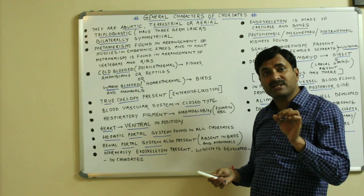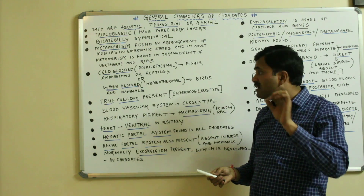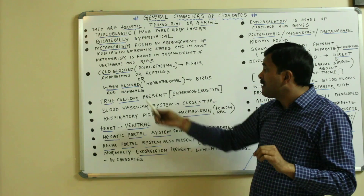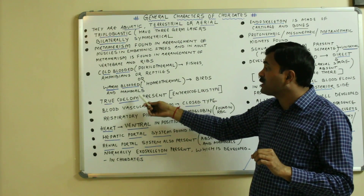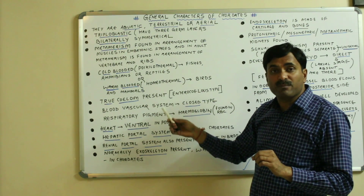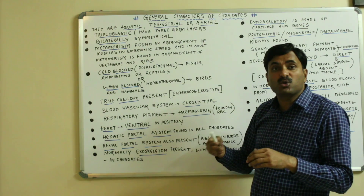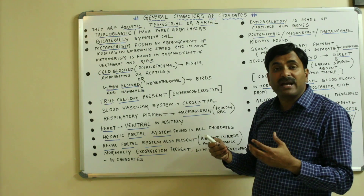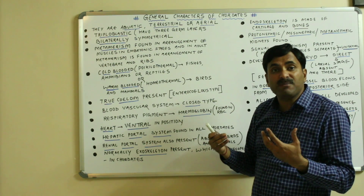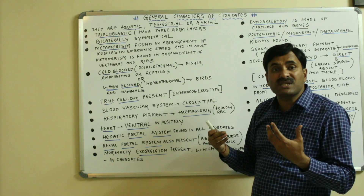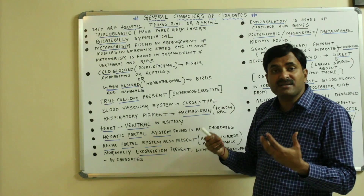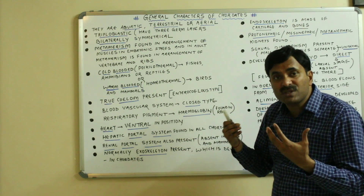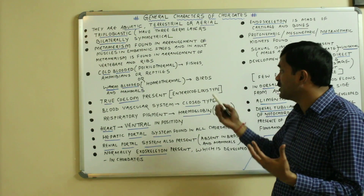Chordates are coelomate organisms, and the coelom type is enterocoel; hence they have an enterocoeloous type of coelom.